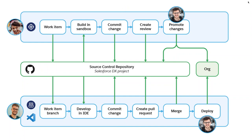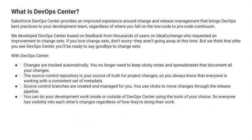This deploys to production — that is how the flow works. Starting again from the work item, you come to the work item branch, then the IDE. Building in a sandbox is two-way here. When you commit changes, you commit to the repository and create a pull request. A pull request shows everyone that you created a branch so they can see what you did. Then you merge your branch and deploy to production.